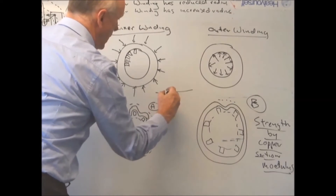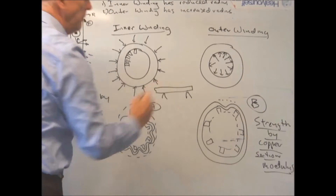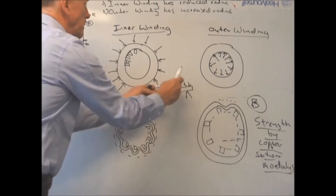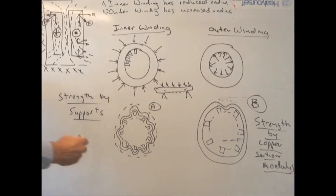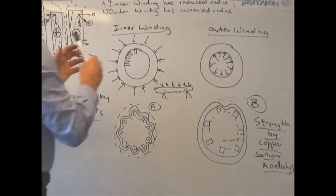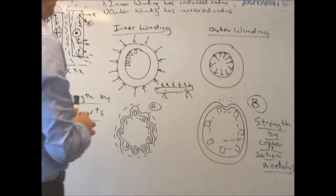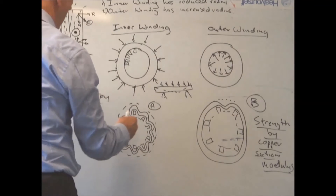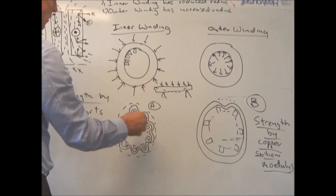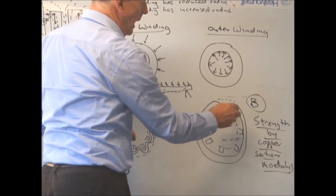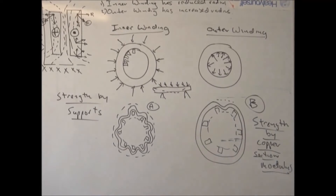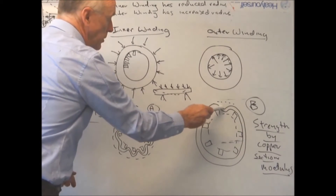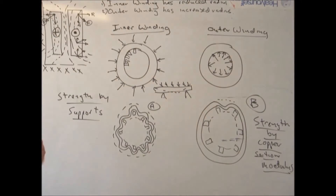It's just like in mechanical engineering where you have two support points and a beam with constant force — by reducing the span you reduce the deflection. So we've determined that the inner winding compresses and the outer winding expands. Looking at typical failures, one type is caused by not enough supports, and another is due to inadequate section modulus or strength of the copper. By looking at whether a failed winding has a single bulge or multiple loops, you can determine what caused the problem.